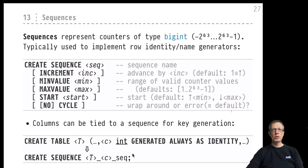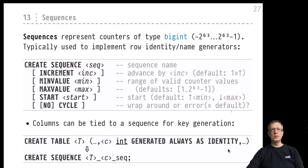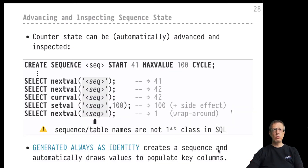Whenever we insert rows into the table, this sequence is queried to generate the next key value, which is then inserted into column c for us — we don't need to bother about key generation at all. The many options you can attach to the CREATE SEQUENCE command can also be attached to this GENERATED ALWAYS AS IDENTITY declaration, giving you some control over the key values being generated.